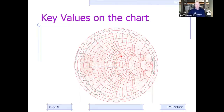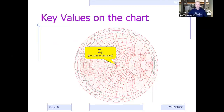Where are the key values on the Smith chart? Right smack in the center—the bullseye—represents our system impedance. In our case that's 50 ohms; on the Smith chart it shows as a normalized 1.0 resistive and j0. That's right there in the center—our system impedance of 50 ohms—and that's where we want to be.